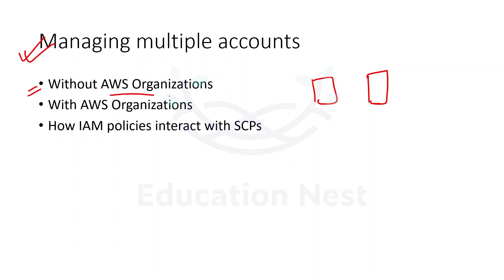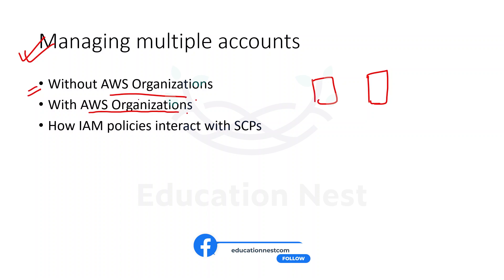When you have to manage multiple accounts, you use a service called AWS Organizations, which allows you to manage accounts in a hierarchy. We will look at what issues arise when managing accounts without AWS Organizations, and then understand how AWS Organizations resolves those issues. We will also cover SCPs — Service Control Policies — which can be applied in organizations.